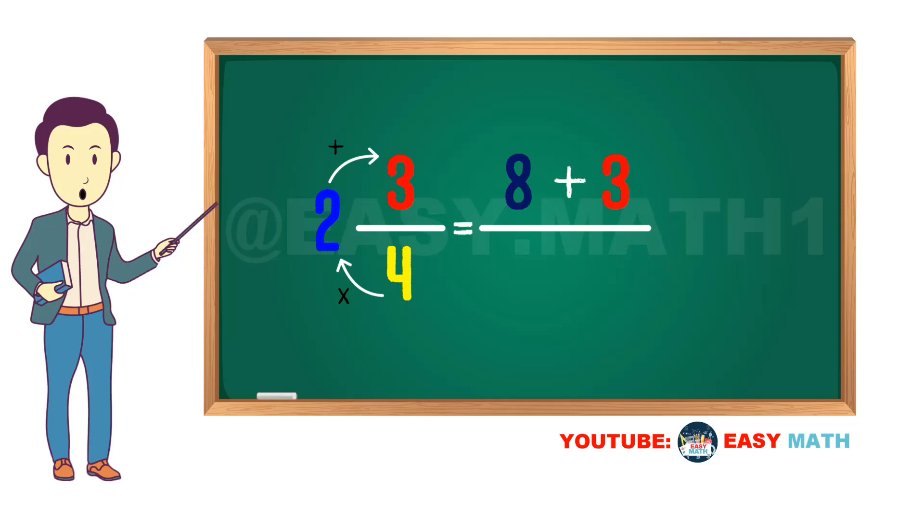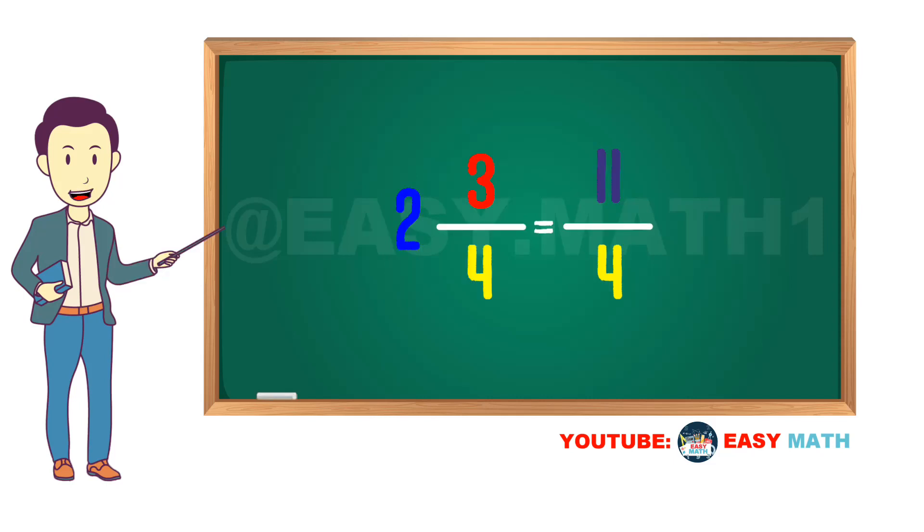And then we add 3. Therefore, 8 plus 3 is equal to 11. This number goes on top as the numerator of our improper fraction and the denominator stays the same. So we can convert two and three quarters into 11 over 4.